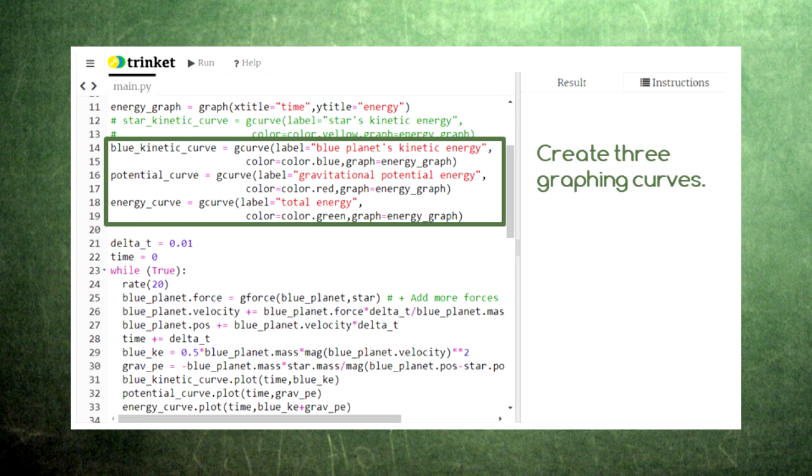Here we set up three different graphing curves. One for the planet's kinetic energy, one for the gravitational potential energy between the planet and the sun, and one for the total of the kinetic energy and the potential energy.